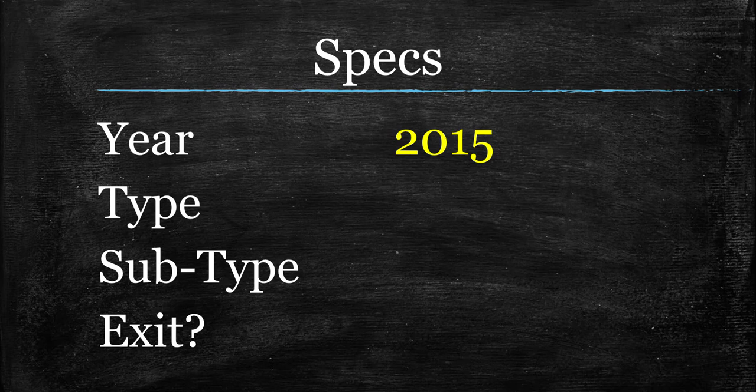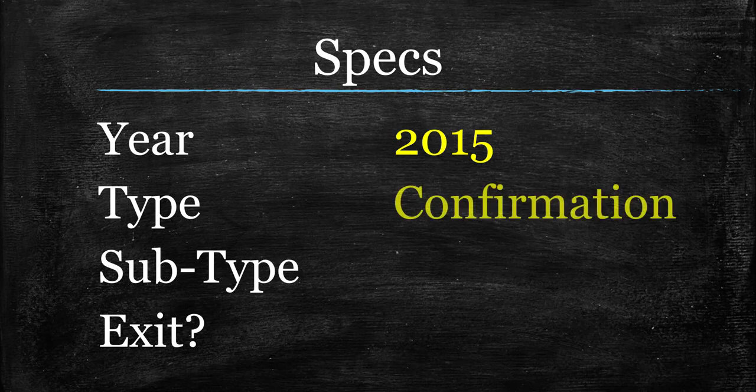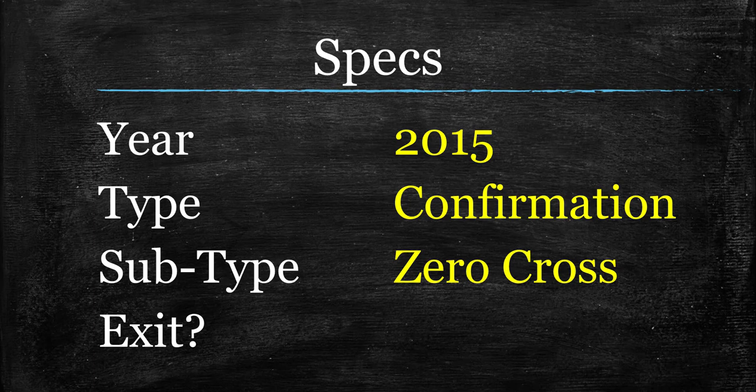This is going to be very, very basic. It is a confirmation indicator. It is a basic zero cross, and that is it. As far as exits go, I would not — personally — not financial advice. We move on. Let's take a look at the Ehlers-Delhi indicator.